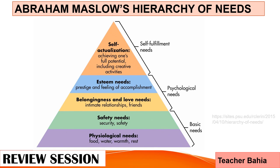Love and belonging refers to friendship, family, your loved ones, and sexual intimacy. After the social needs, there is what we call self-esteem — it refers to your confidence, your achievement, gaining the respect of others, and being able to respect other people also. The highest level is what they call self-actualization, which refers to morality, creativity, spontaneity, problem solving, and acceptance of facts of an individual. That is Abraham Maslow's hierarchy of needs.